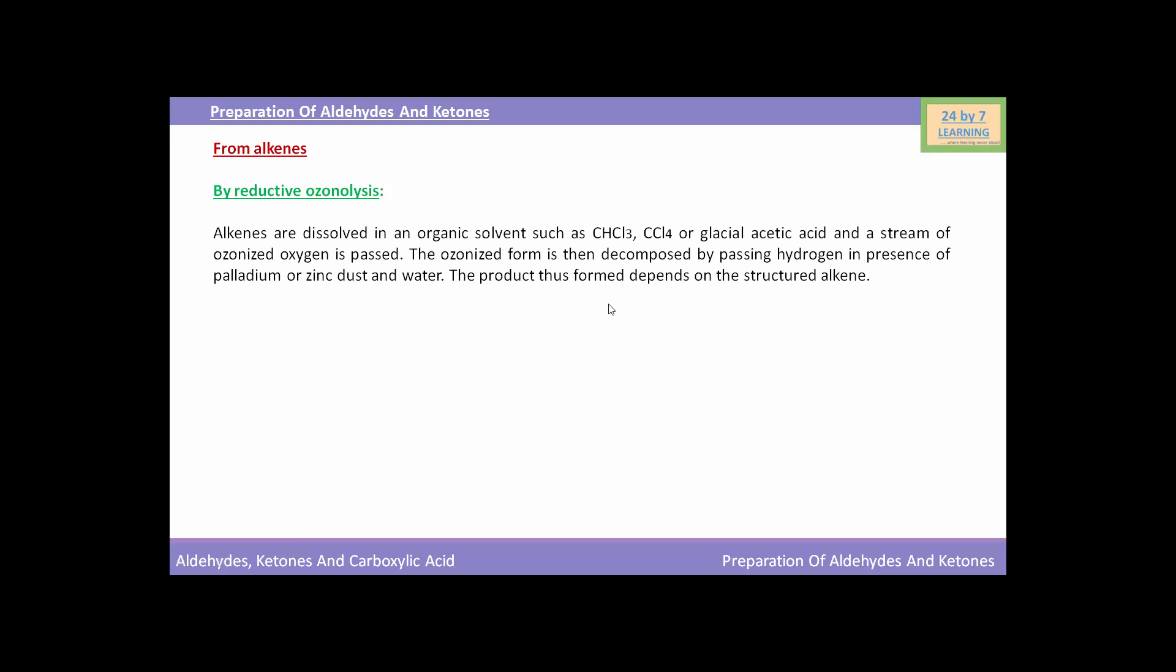Alkenes are dissolved in an organic solvent such as CHCl3, CCl4, or glacial acetic acid, and a stream of ozonized oxygen is passed. The ozonide form is then decomposed by passing hydrogen in the presence of palladium or zinc dust and water. The product thus formed depends on the structure of the alkene.